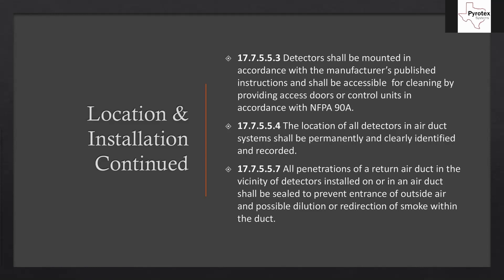The location of all detectors in the air duct system shall be permanently and clearly identified and recorded. This means as-built drawings must show exactly where the duct detectors ended up. On initial design I try to get close using mechanical drawings, but things change during construction — units get moved. If the duct detector had to go in the hallway outside the mechanical room instead of inside it, that needs to be reflected accurately on the as-built drawings.